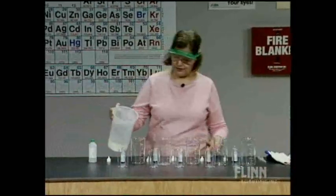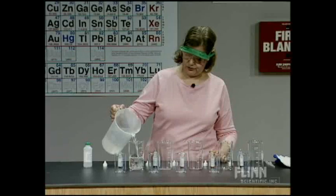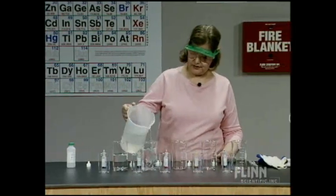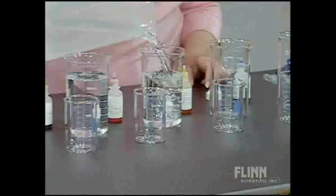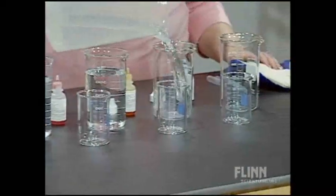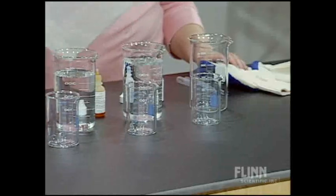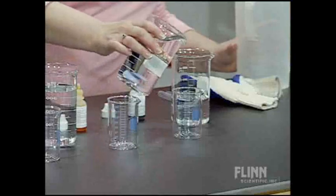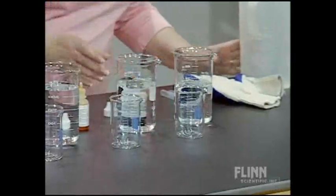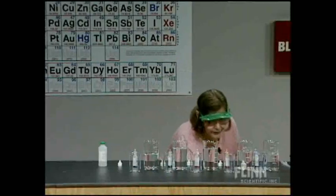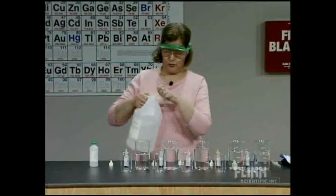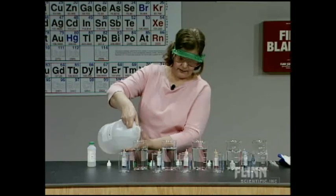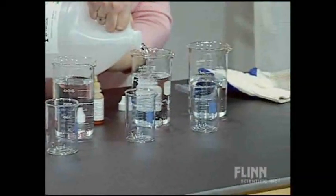I'm simply going to start by adding water to each of my beakers here. The exact amount is not important. This is distilled water. I'm going to add about 400 milliliters to each. I've got some extra distilled water here, and I do want to make them about equal. I've got about 400 milliliters of water in each.